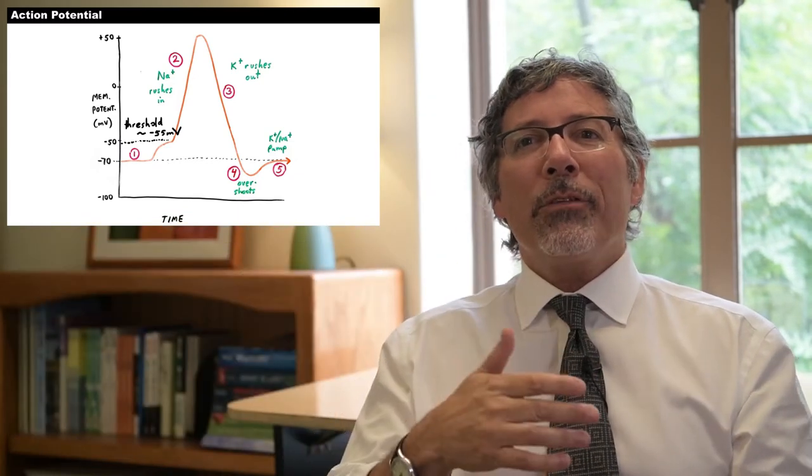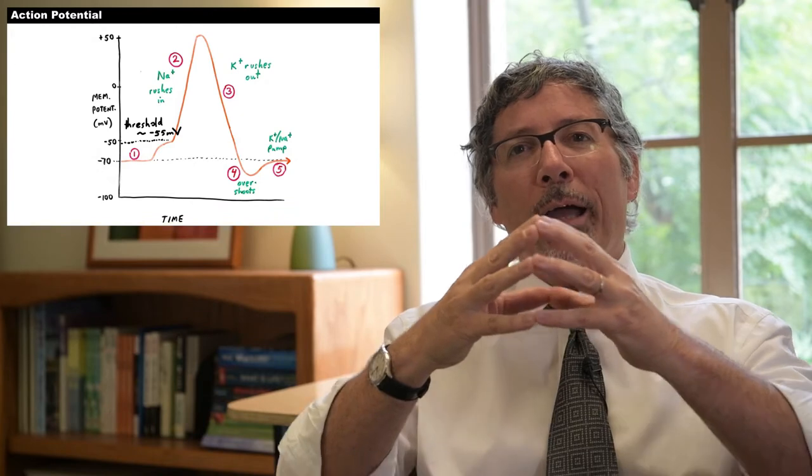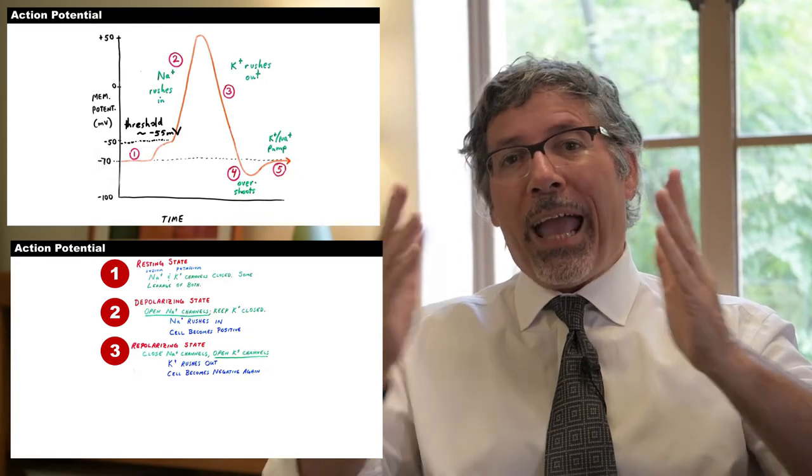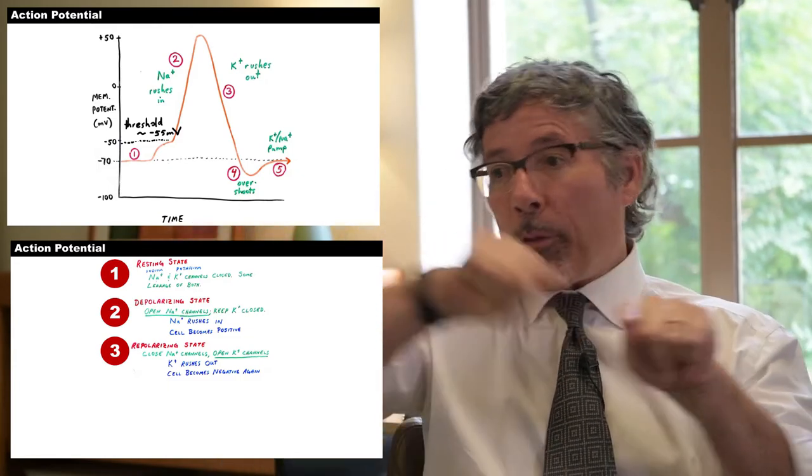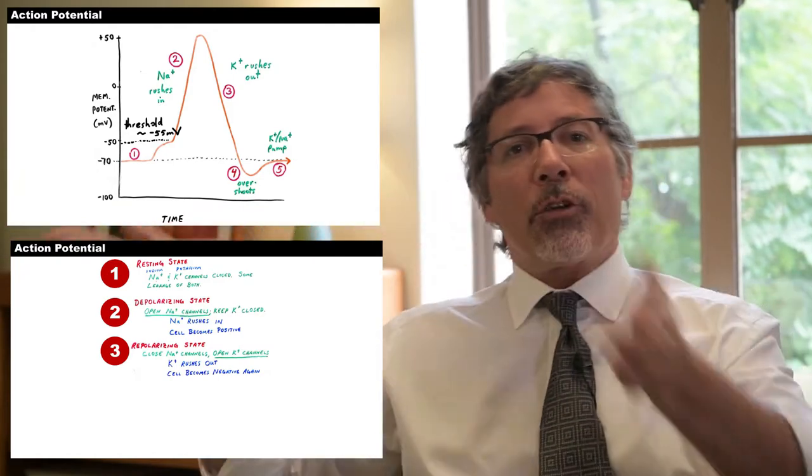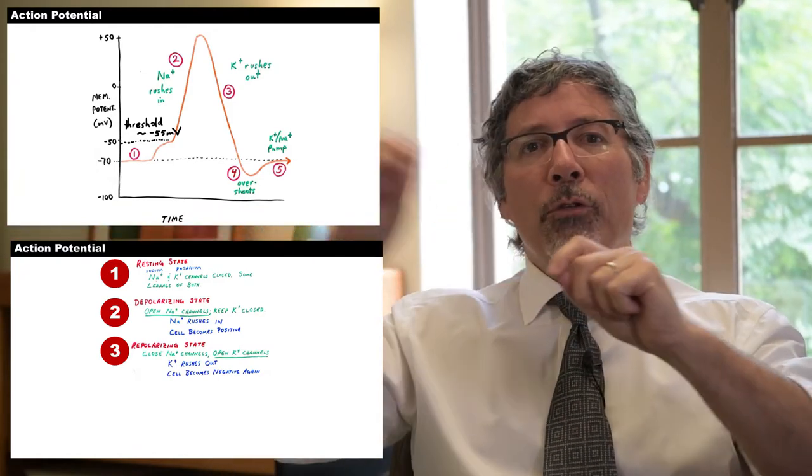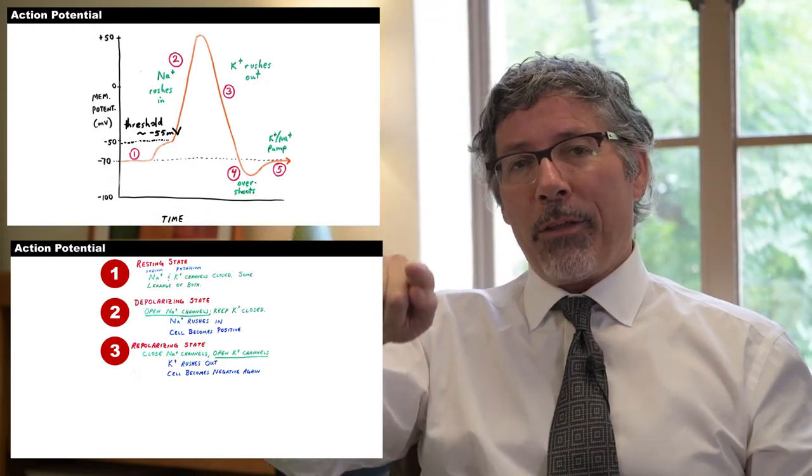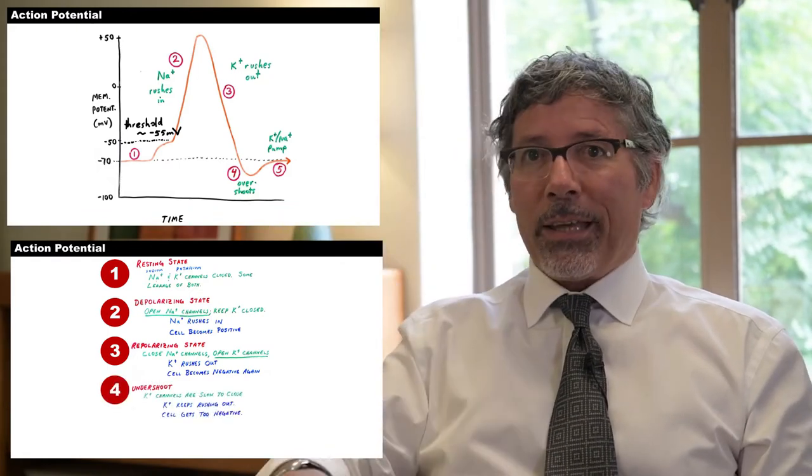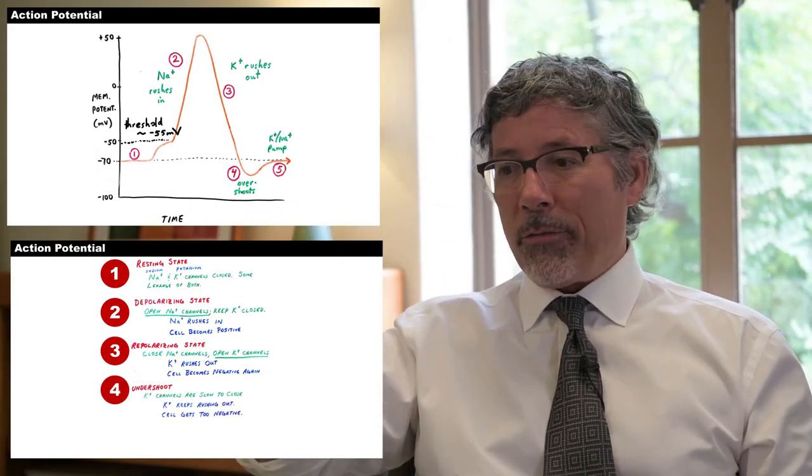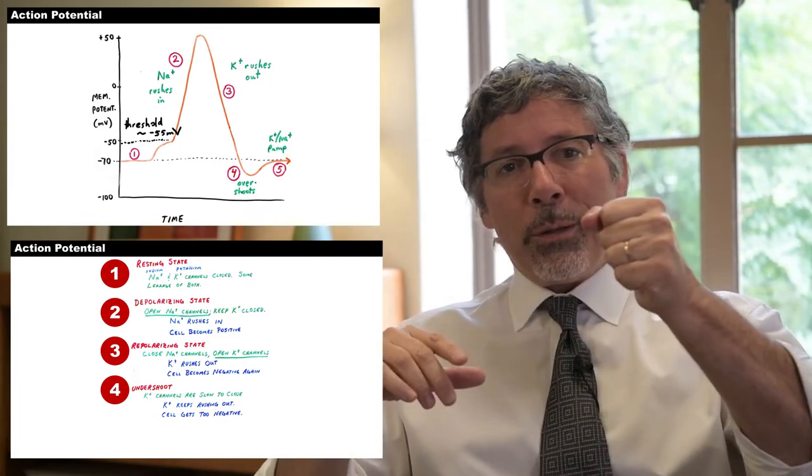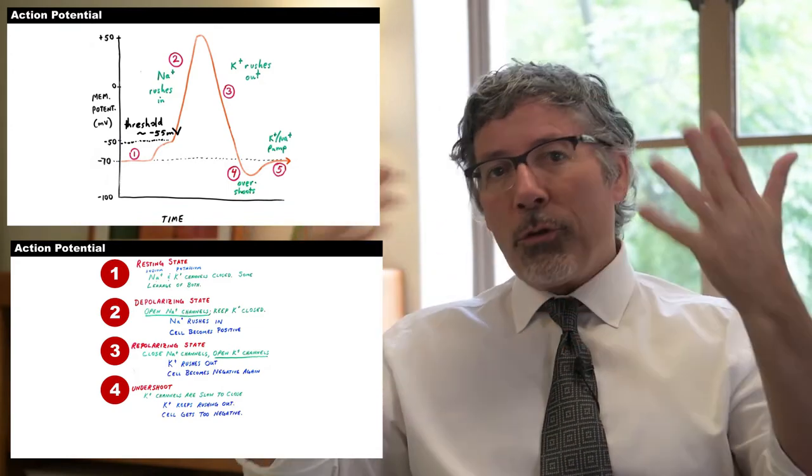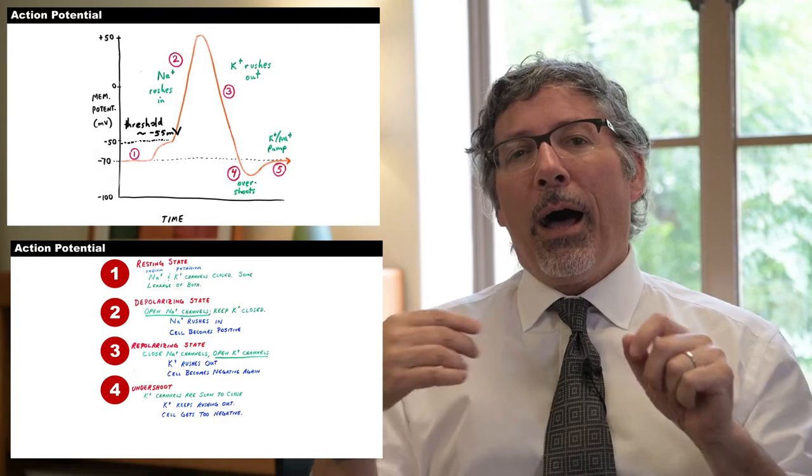The next thing that happens is that you repolarize the cell. This happens by a bunch of potassium channels opening up. Remember potassium is also positively charged and we've pumped way more inside the cell, so the potassium rushes out against its concentration gradient. As you do that, you're losing positive charge, so the cell is becoming less positively charged. The membrane potential comes back down until it's even going to undershoot the negative 70 resting potential.